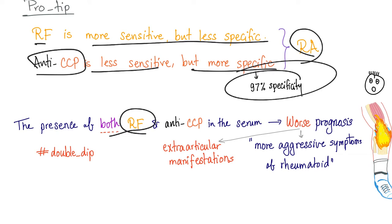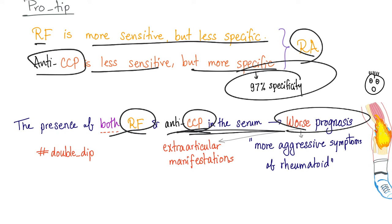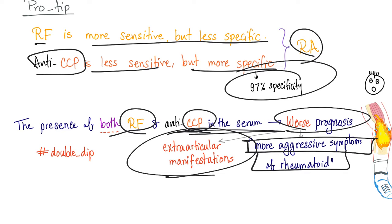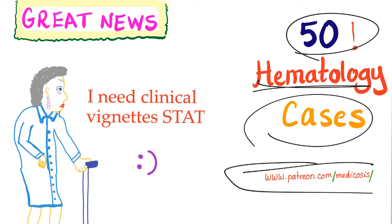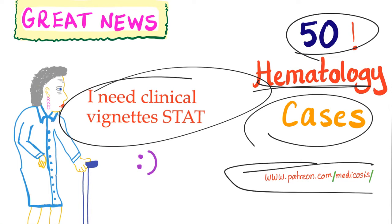If you have both rheumatoid factor and anti-CCP in the serum, you have worse prognosis and more aggressive symptoms of rheumatoid arthritis, with extra-articular manifestations such as carpal tunnel syndrome, scleral inflammation, and interstitial fibrosis of the lung. For a limited number of people, I have 50 hematology cases available on Patreon — go to patreon.com/medicosis to get those clinical vignettes.